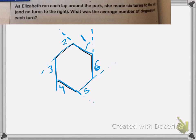So she made six turns. And she made it all the way around the park. So we know that she went a total of 360 degrees, because she ended up back where she started. So since she made six turns, we're going to divide 360 by the six turns.